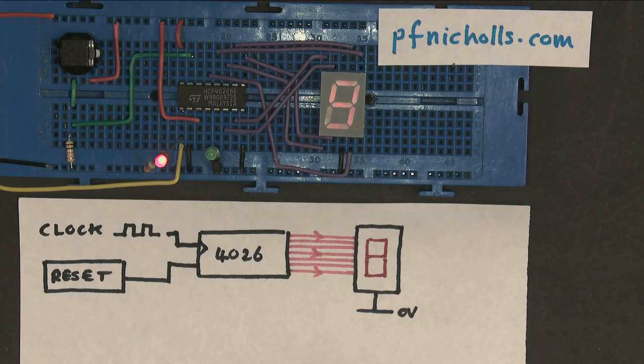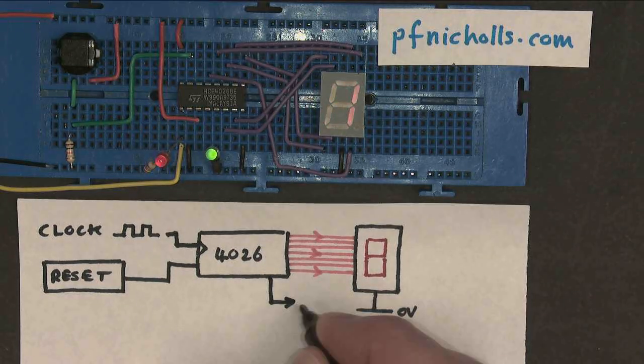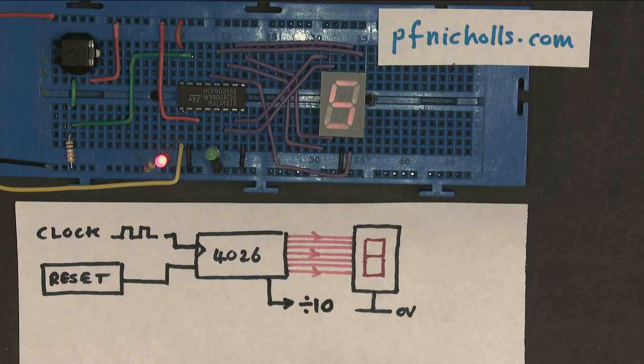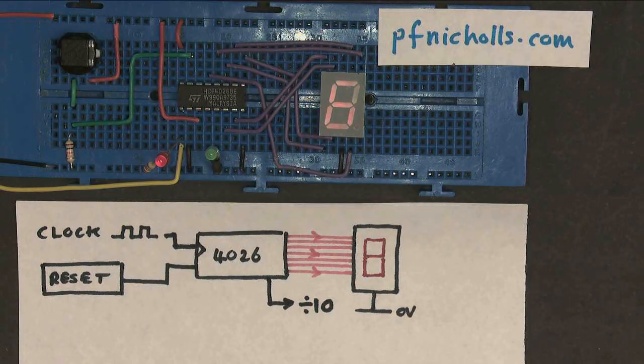So the divide by 10 output is very useful, because what it allows us to do is divide the frequency by 10. Useful for driving another counter, if you have counters counting powers of 10.